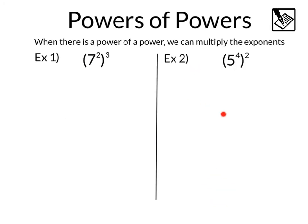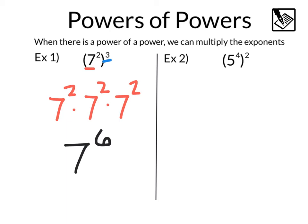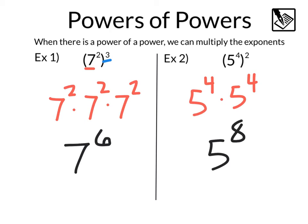You're going to feel very powerful when you master this next one — powers of powers. When there is a power of a power, we can multiply the exponents. Here we've got seven squared to the third power. That means we've got seven squared times seven squared times seven squared, three different times, and that's three groups of two. Three times two gives us an exponent of six, so that would be seven to the sixth. Over here, we've got five to the fourth to the exponent of two. That gives us five to the fourth times five to the fourth — two groups of four. Two times four is eight, leaving us with five to the eighth power.